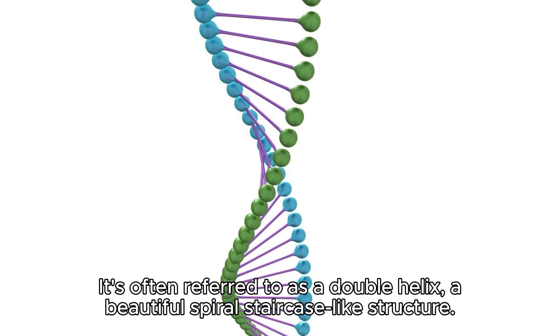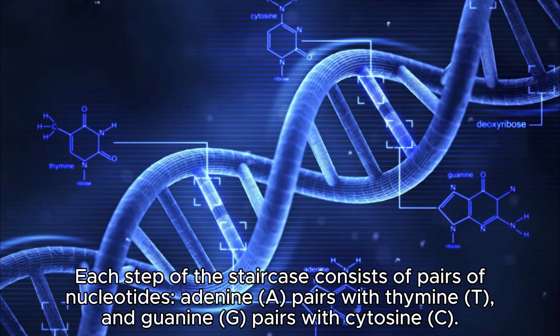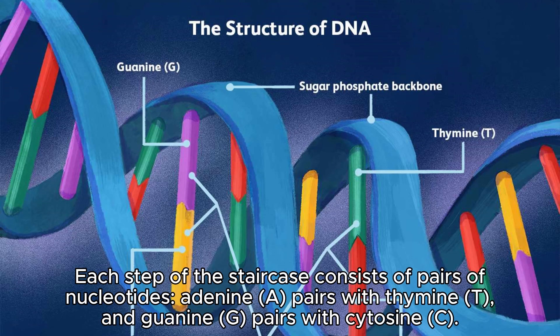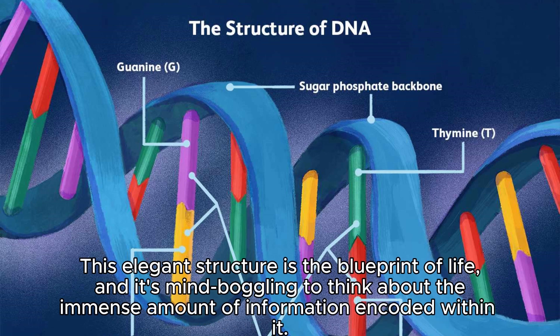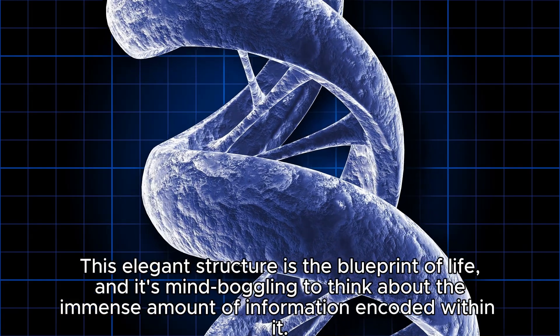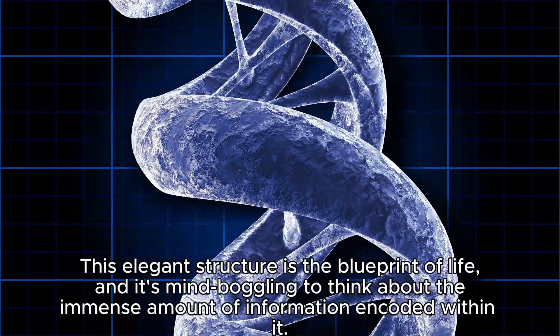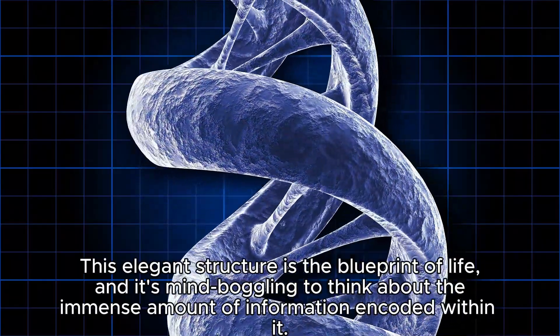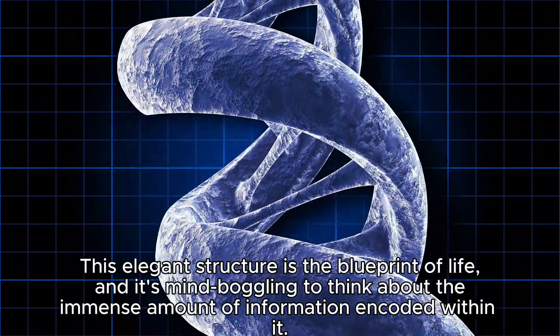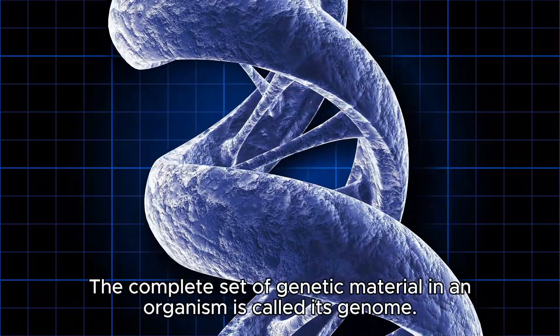Now let's talk about the structure of DNA. It's often referred to as a double helix — a beautiful, spiral staircase-like structure. Each step of the staircase consists of pairs of nucleotides: adenine (A) pairs with thymine (T), and guanine (G) pairs with cytosine (C). This elegant structure is the blueprint of life, and it's mind-boggling to think about the immense amount of information encoded within it.